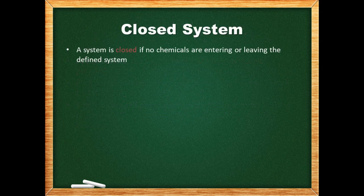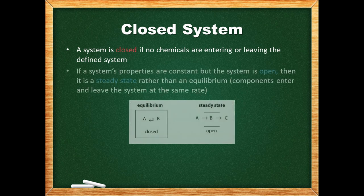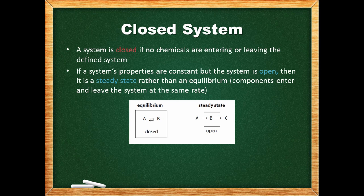For a system to be closed, there must be no chemicals entering or leaving the system. If a system's properties are constant but it is open, then it's a steady state rather than an equilibrium. In a steady state, components enter and leave the system at the same rate rather than going back and forth within an equilibrium system.